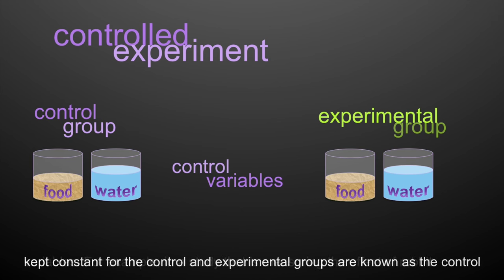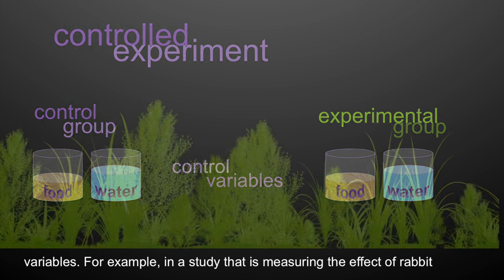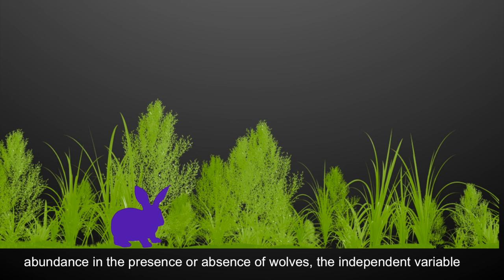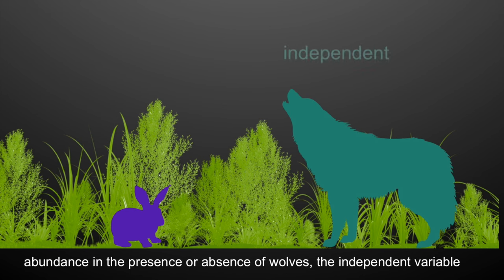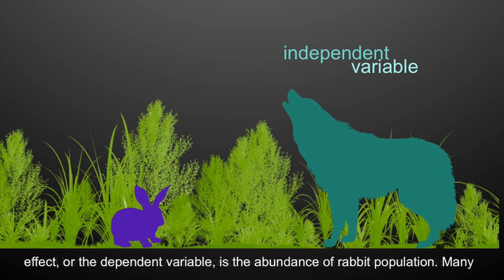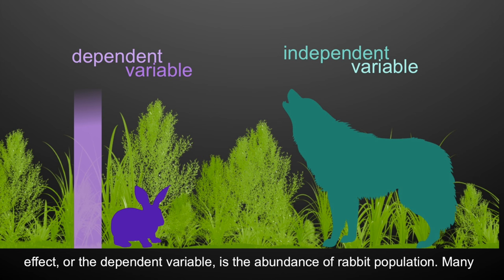For example, in a study measuring the effect of rabbit abundance in the presence or absence of wolves, the independent variable would be the presence or absence of wolves. In this example, the measured effect, or the dependent variable, is the abundance of the rabbit population.